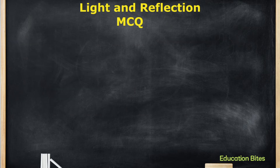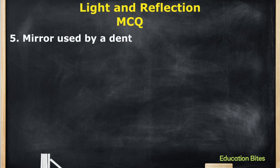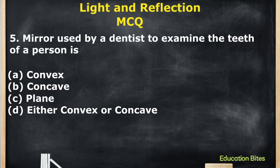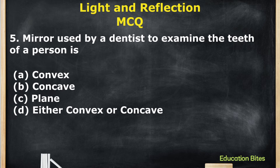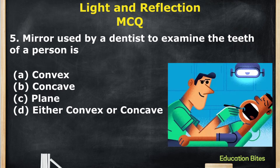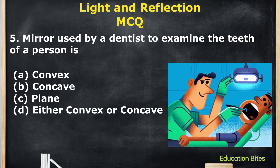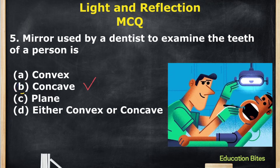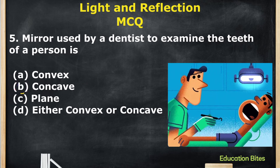The next question: The mirror used by a dentist to examine the teeth of a person is — A. Convex, B. Concave, C. Plane, or D. Either convex or concave. The correct option is B: Concave.